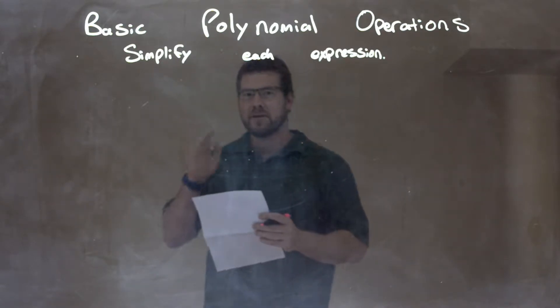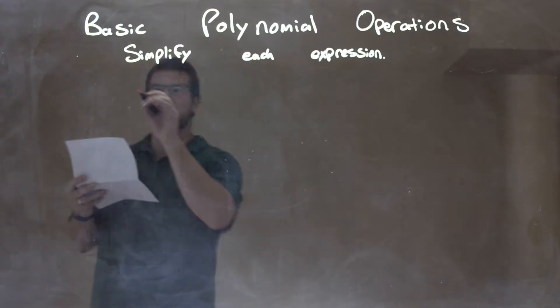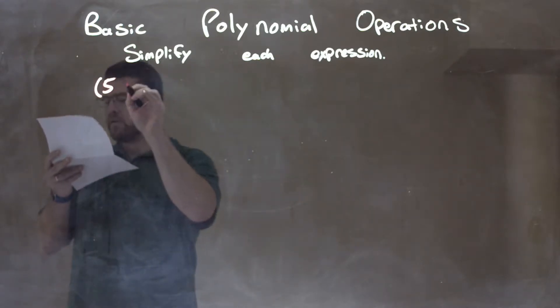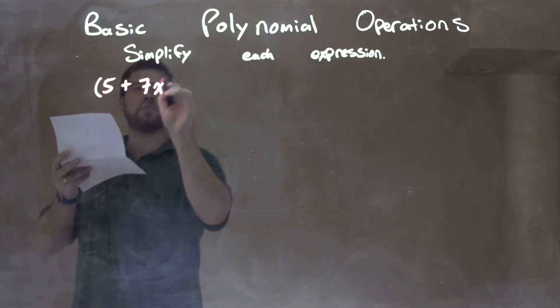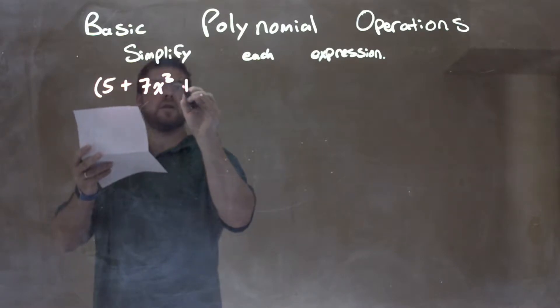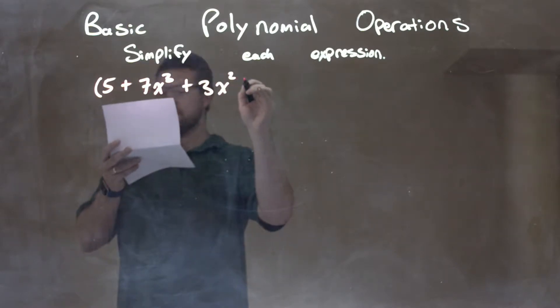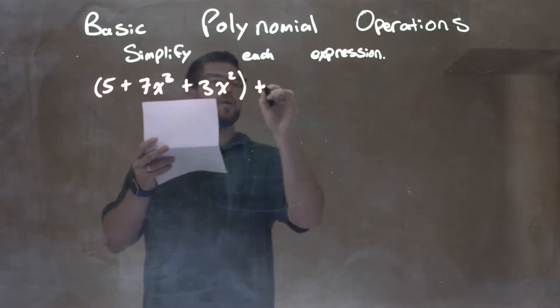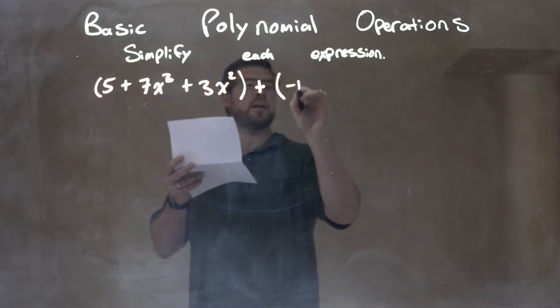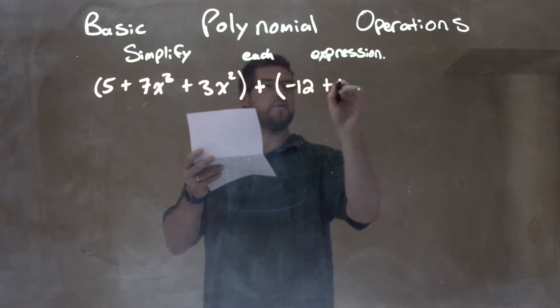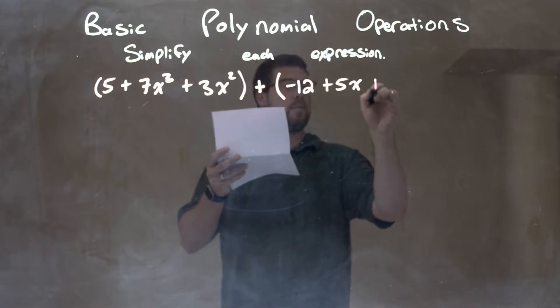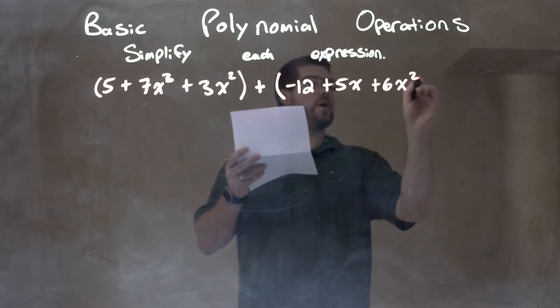So if I was given this expression: 5 plus 7x to the third plus 3x squared, that's in one parenthesis, plus, second one, negative 12 plus 5x plus 6x squared.